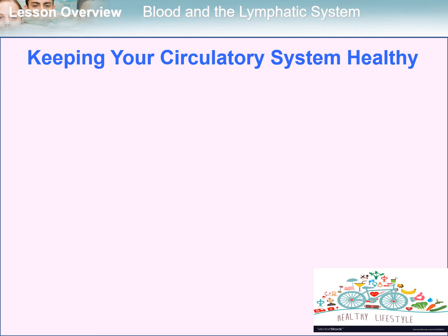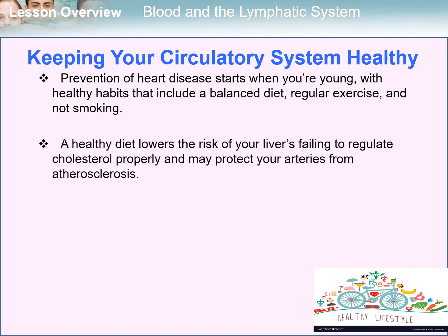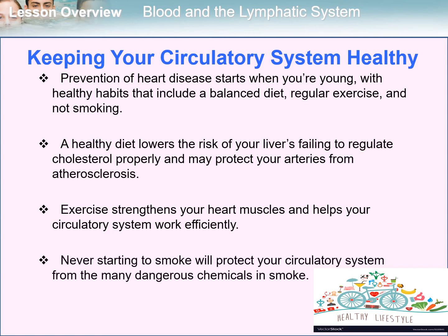How do we keep our circulatory system healthy? Prevention of heart disease starts when you're young, with healthy habits that include a balanced diet, regular exercise, and not smoking. A healthy diet lowers the risk of your liver failing to regulate cholesterol properly and may protect your arteries from atherosclerosis. Exercise strengthens your heart muscles and helps your circulatory system work efficiently. Lastly, never starting to smoke would protect your circulatory system from the many dangerous chemicals in smoke.